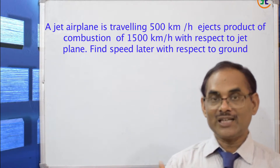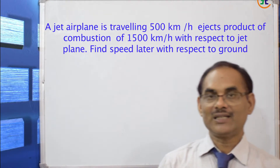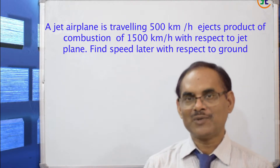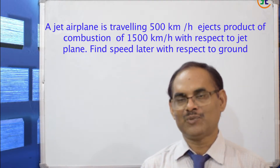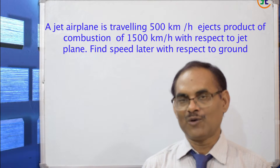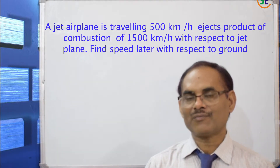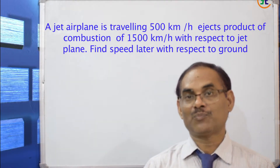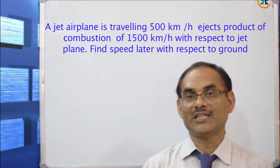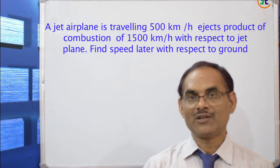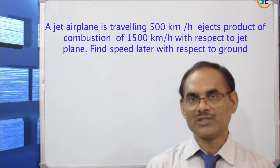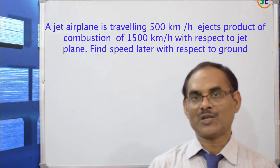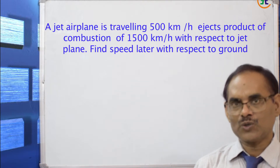The first question: A jet airplane is traveling with a speed of 500 kilometers per hour and ejects products of combustion at 1500 kilometers per hour with respect to the jet plane. Find the speed of the smoke with respect to the ground.